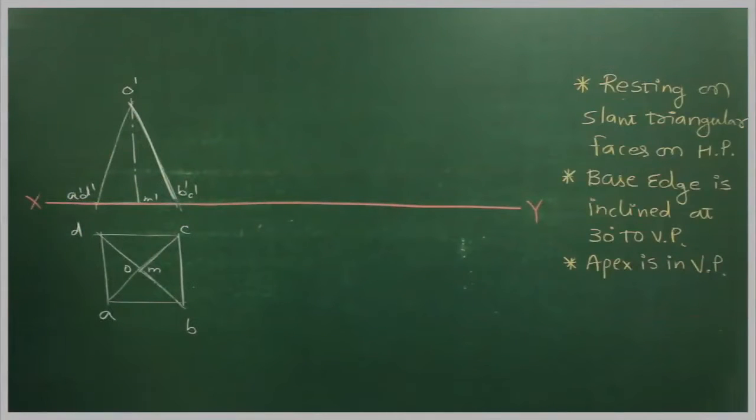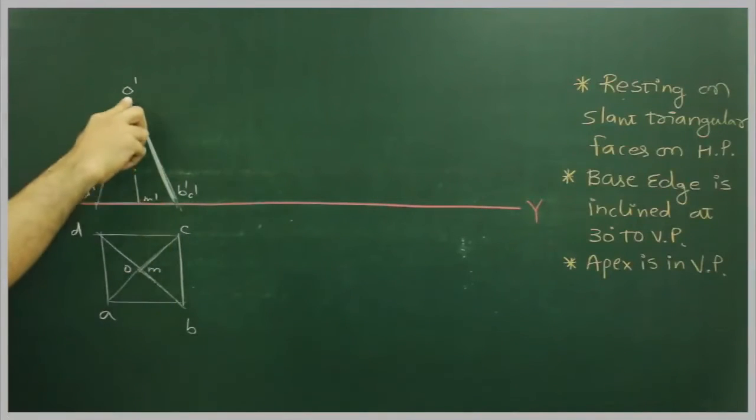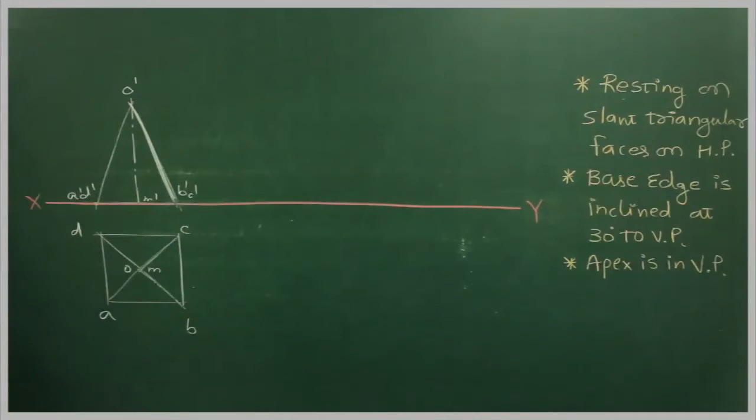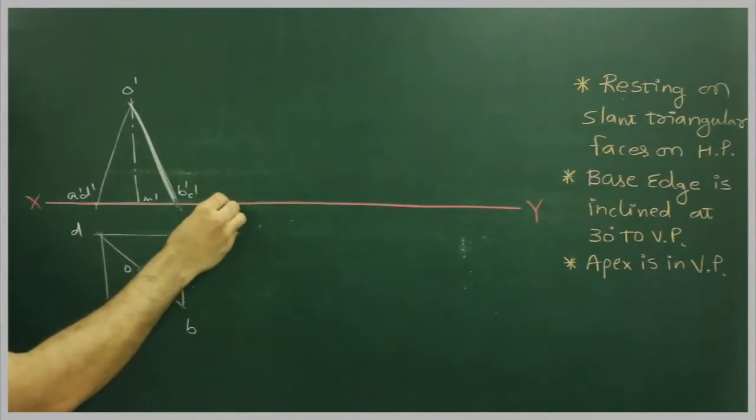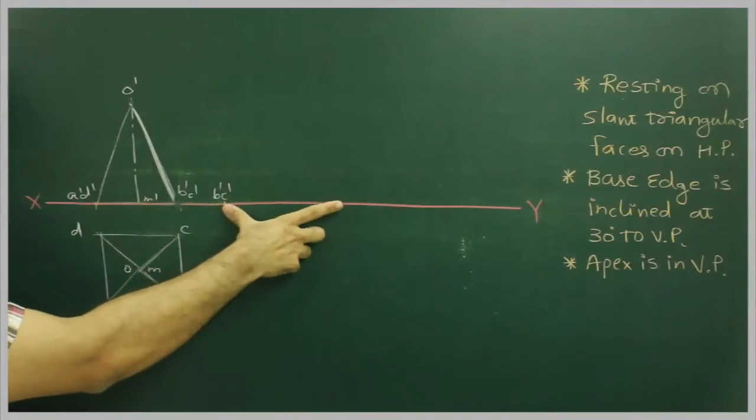See, they have mentioned resting on slant triangular face. So this is the triangular face which will appear as a line in front of you. Now, this is resting on horizontal plane. So what we will do, we will mark B'C', take B'C' to O' and we will cut on this side.